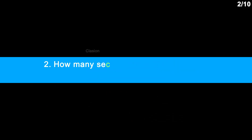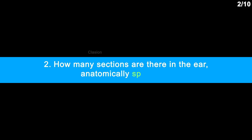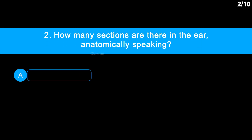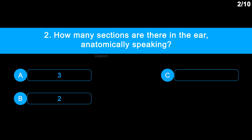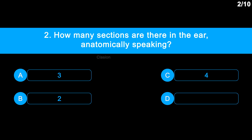Question number 2: How many sections are there in the ear, anatomically speaking? Option A: 3. Option B: 2. Option C: 4. Option D: 5.